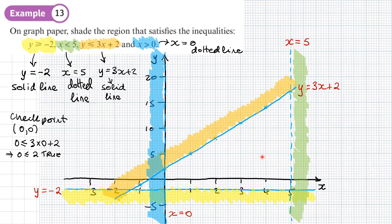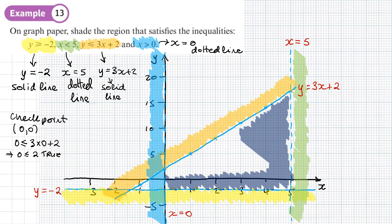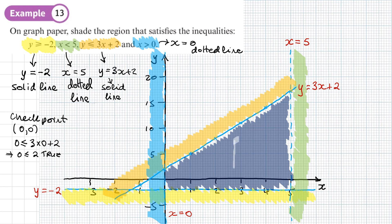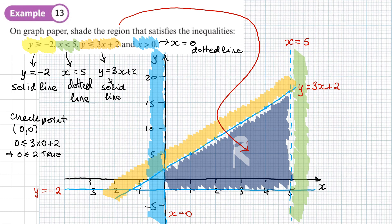The area I do want is this region here. The question says to shade the region that satisfies all inequalities, so I shade it in dark blue and label it R with an arrow pointing to it, making it clear to the examiner which part I want. You could also erase the outer shading to leave just the clear inner region — that would be the final solution.